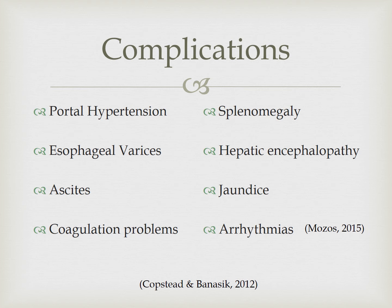With cirrhosis, there is a decrease in the synthesis of bile fats, which are used for the absorption of fat-soluble vitamins such as vitamin A, D, E, and K. Vitamin K is involved in the clotting factors, and a lack of this vitamin will lead to bleeding and bruising. This can be very dangerous, as the esophageal varices are already at risk for rupture due to high pressure, and if a rupture occurs, the lack of vitamin K could lead to massive bleeding.